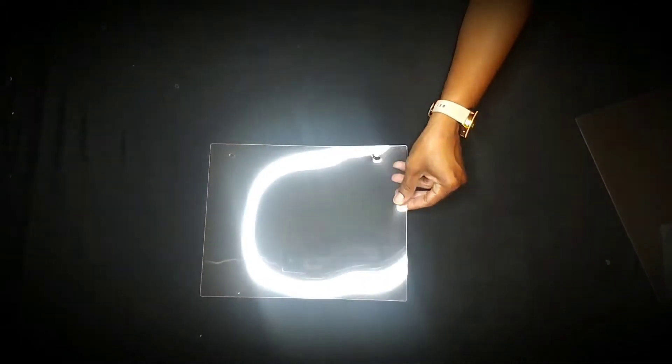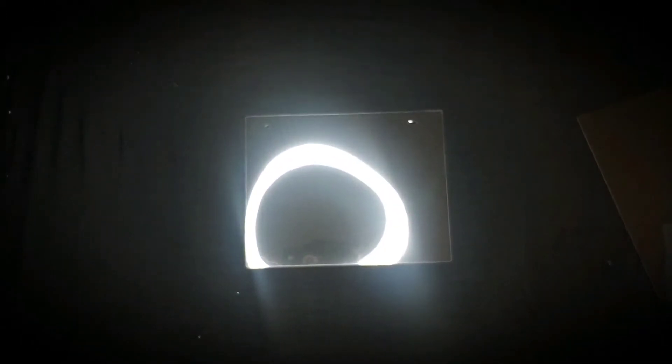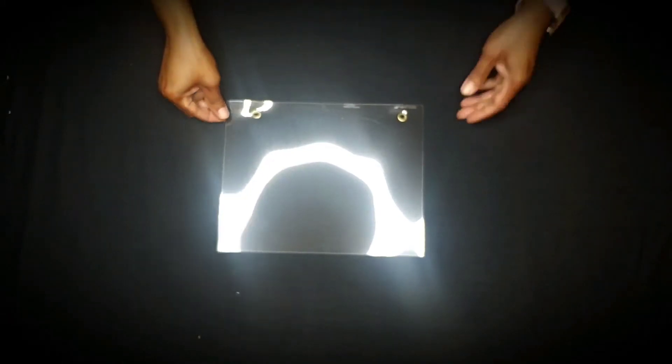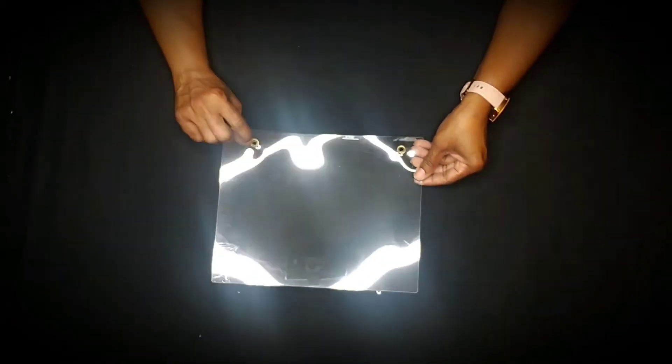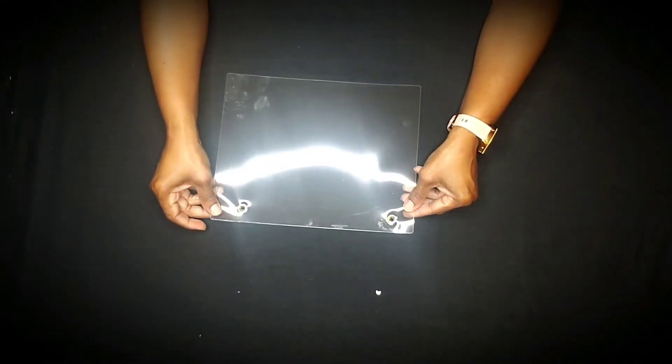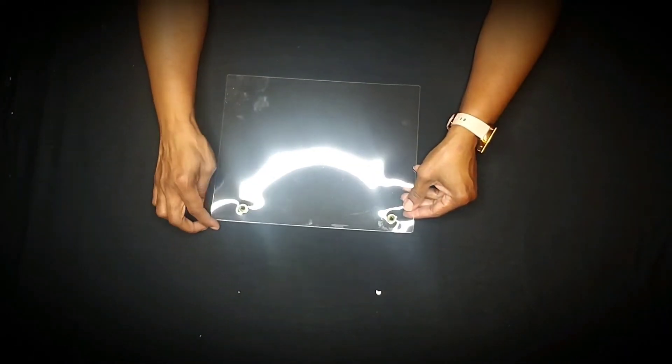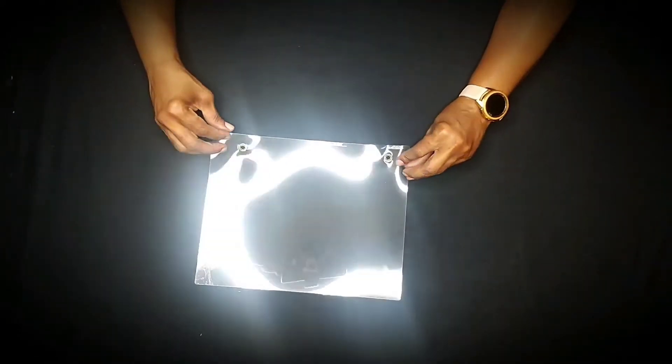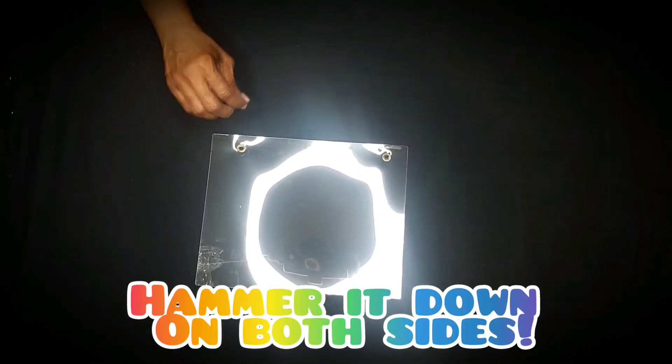Don't worry about the little holes or whatever because you're going to close it up with the closure. Then what you're going to do is put the closures on the front and the back. This is the front because you have the big ones and then this is the back.